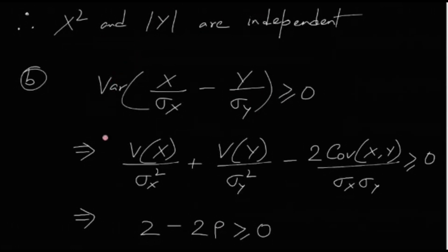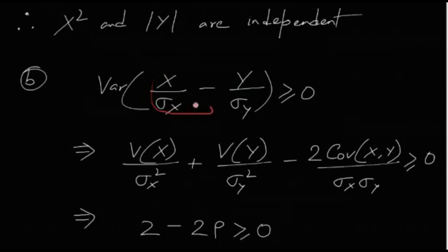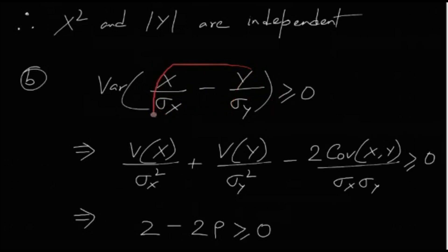Consider the variance of (X/σ_x − Y/σ_y). This is a random variable since σ_x and σ_y are constants. Variance is always non-negative, and expanding gives Var(X/σ_x)² + Var(Y/σ_y)² − 2·Cov(X,Y)/(σ_x · σ_y) ≥ 0.